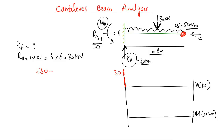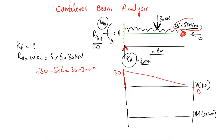The upward reaction is +30 kN, and we subtract the distributed load: 5 kN/m × 6 m = 30 kN, giving 30 − 30 = 0. So the shear force at the free end is zero. This makes sense because there is no load acting at the extreme end of the beam — all loading is supported at the fixed support.